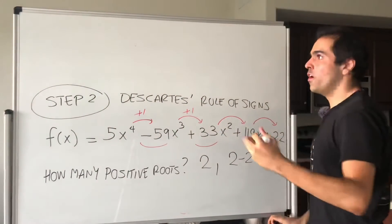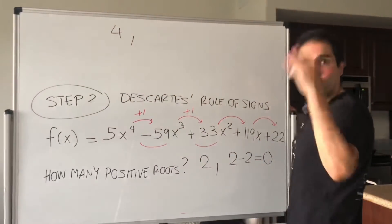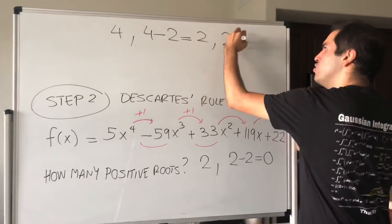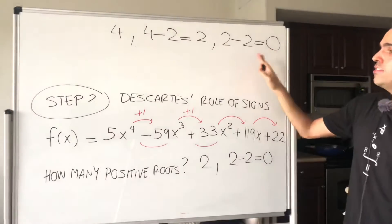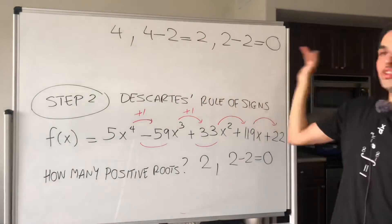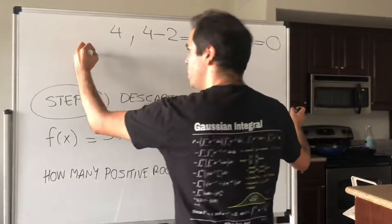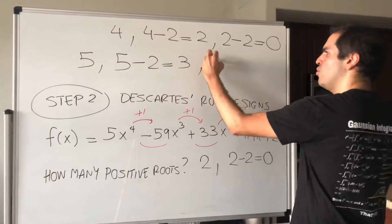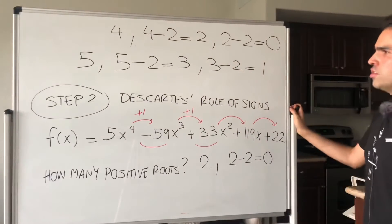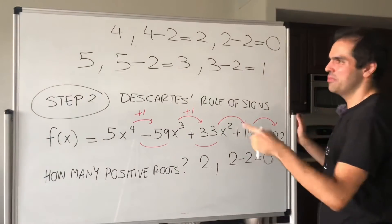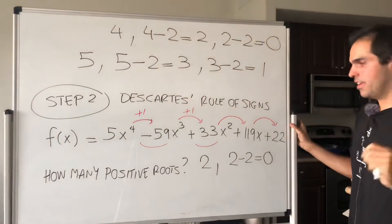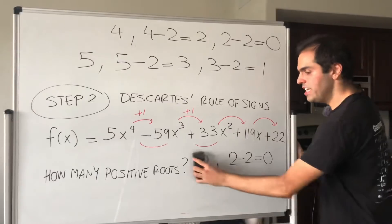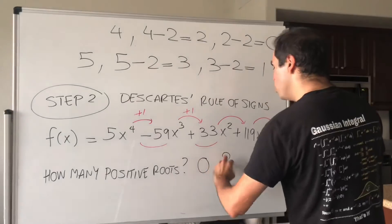To elaborate: if you found four sign changes, the answer would be 4, then 4 minus 2 equals 2, then 2 minus 2 equals 0 — so four, two, and zero. If you found five sign changes, you'd get 5, then 3, then 1 — stopping there because subtracting 2 more gives a negative number. In our case, we found two sign changes, so the answer is either 2 or 0 positive roots. In particular, you cannot have three positive roots.